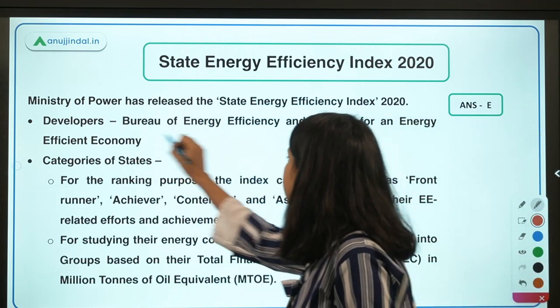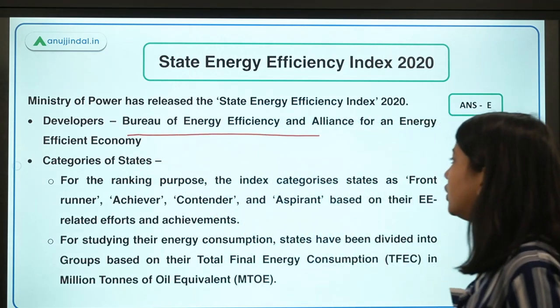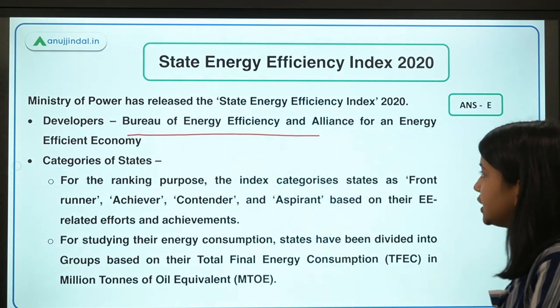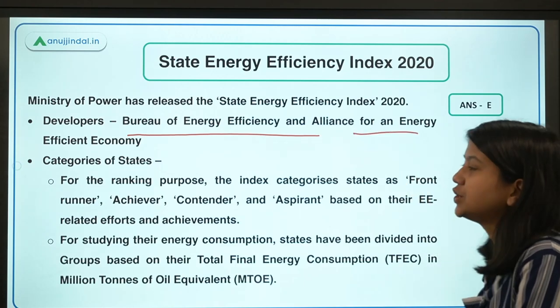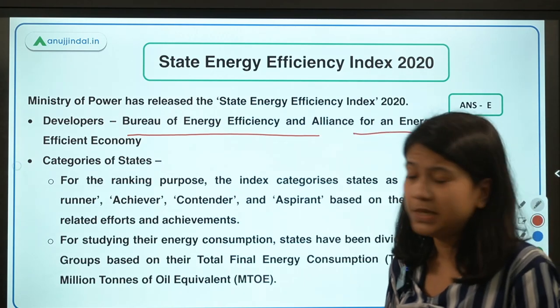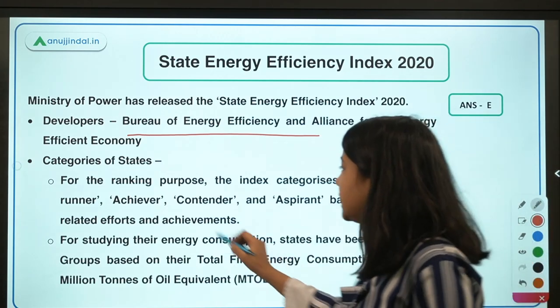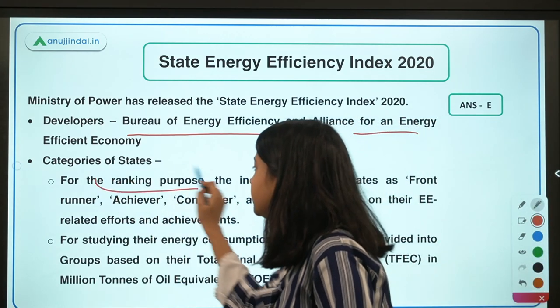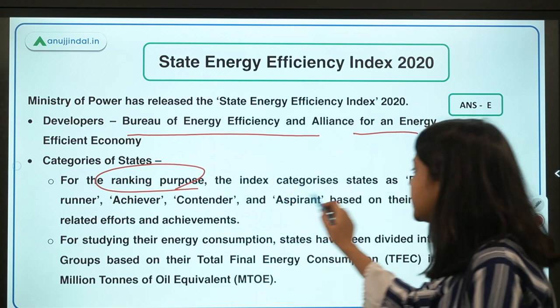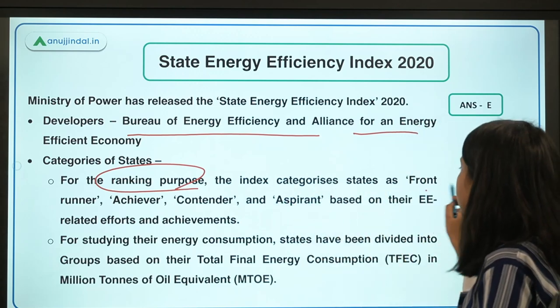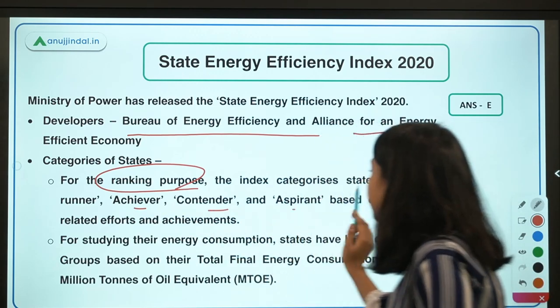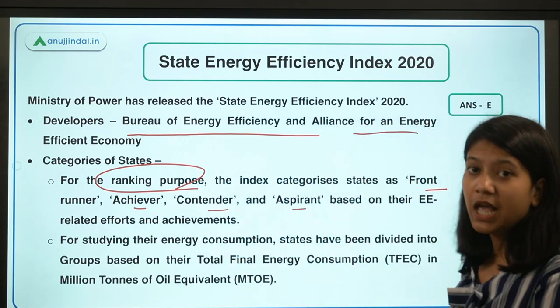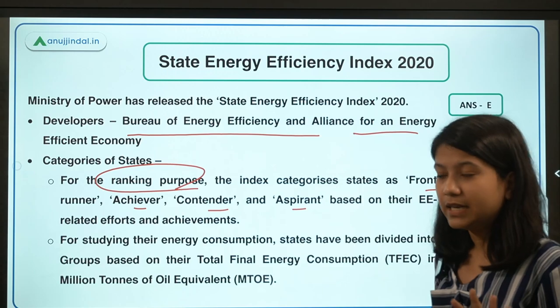The developers of this index are the Bureau of Energy Efficiency and the Alliance for an Energy Efficient Economy. The four ranking categories are: Front Runner, Achiever, Contender, and Aspirant.